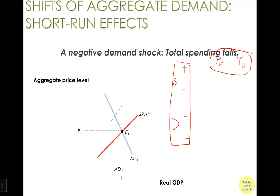In a supply shock, the impact on price and quantity will be opposite: a positive supply shock means price declines and quantity increases; negative supply shock means price increases and quantity decreases. For a demand shock, both price and quantity move in the same direction — positive demand shock raises both, negative demand shock lowers both. This tells us whether the economy received a demand shock or a supply shock.